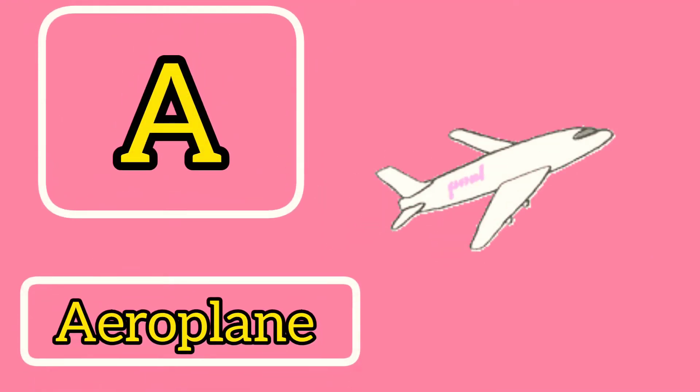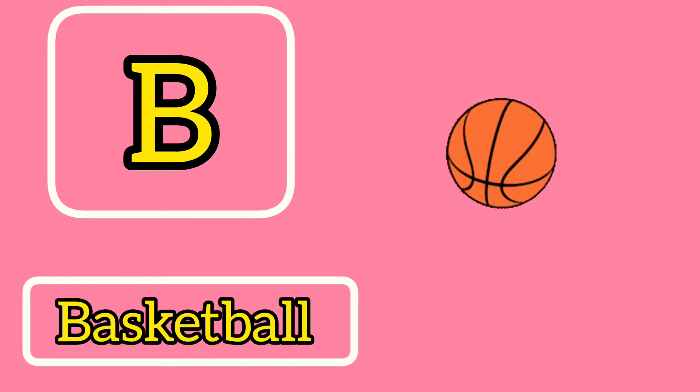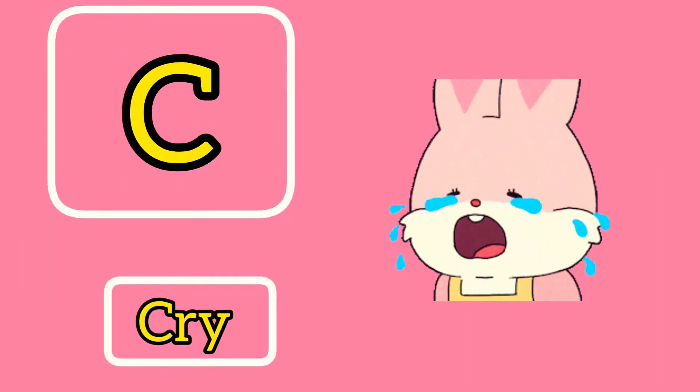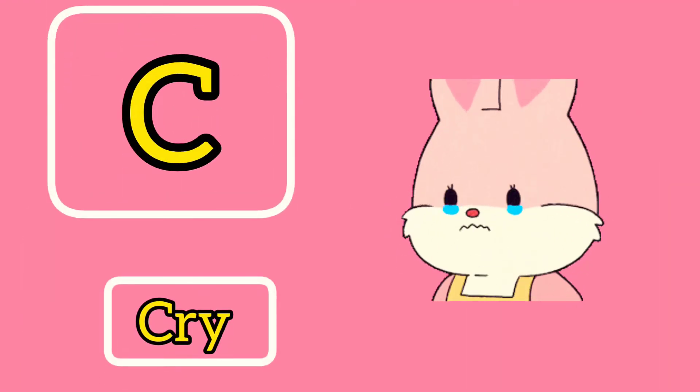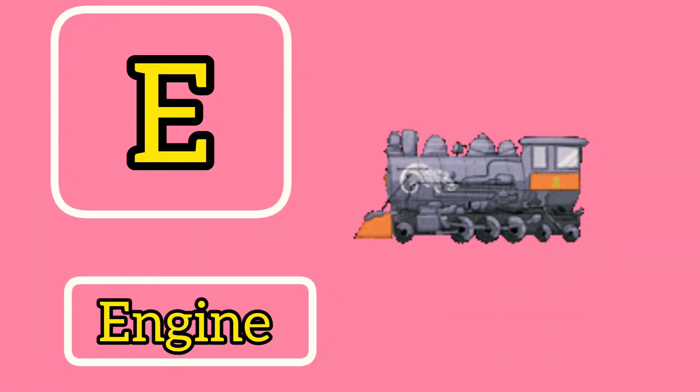A is for Aeroplane. B is for Basketball. C is for Cry. D is for Dust Bean. E is for Engine.